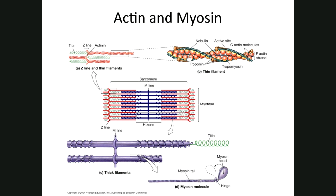A second protein, troponin, is regularly spaced along the tropomyosin molecule. So you have tropomyosin as the long strand of protein, with troponin spaced at regular intervals along it — tropomyosin, troponin, tropomyosin, troponin, at regular intervals.